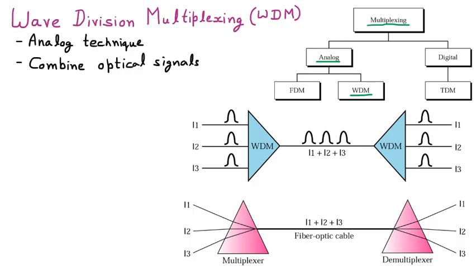Now let us take the example of the first diagram to understand WDM. Suppose there are three light waves: L1, L2, and L3. These lights are going and they are merged together through a multiplexer, combining them into one — L1 plus L2 plus L3. Let us suppose this was the source and this was the destination, so the lights are moving from source to destination, with the multiplexer at the source side.